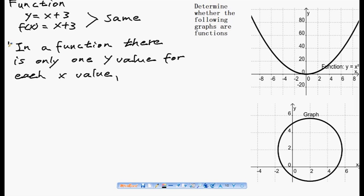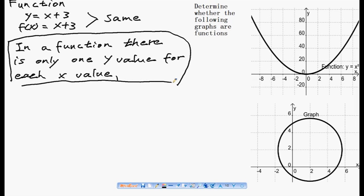This is very important to determine whether a graph is a function. So what does it mean is, in a function, for every certain, for each x value, there is only one y value.